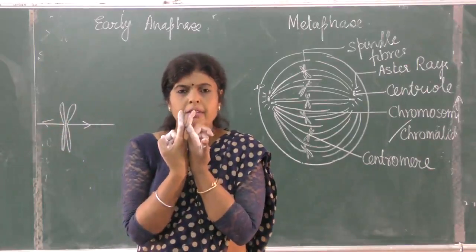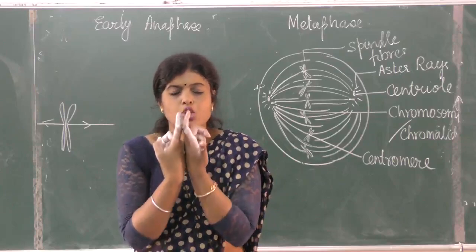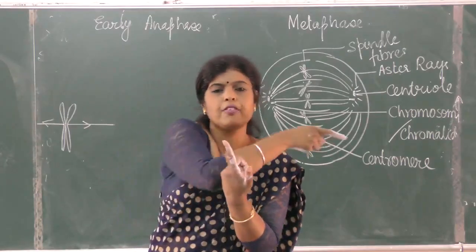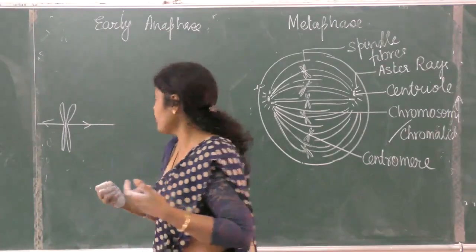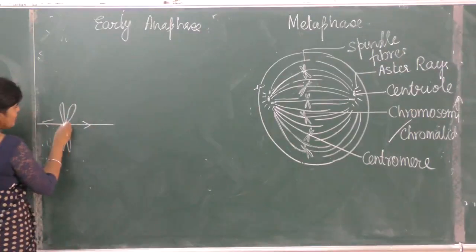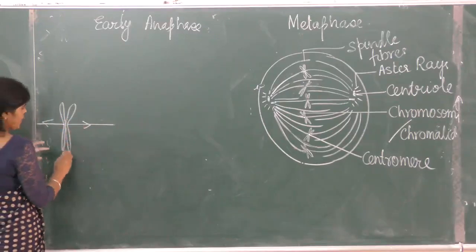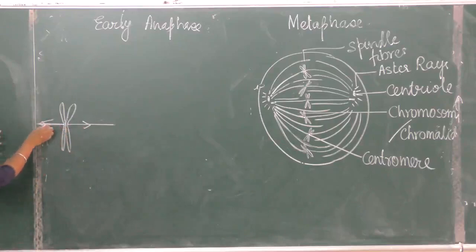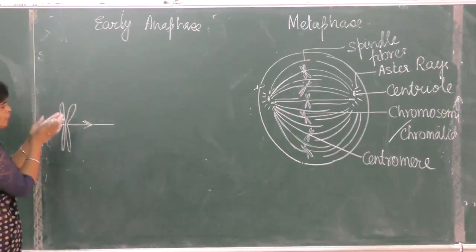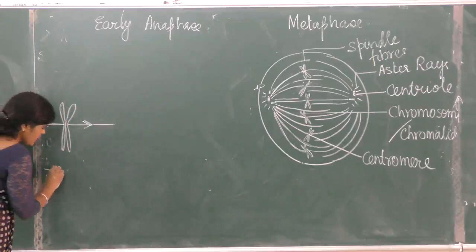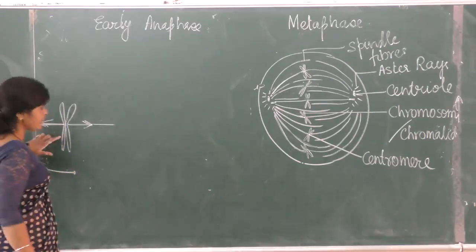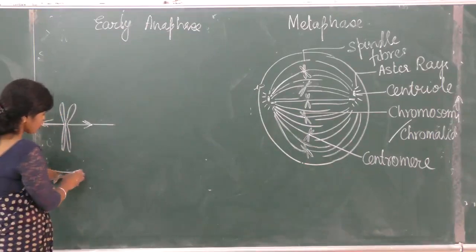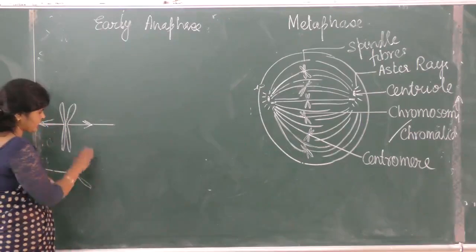The two chromatids were superficially attached, and now due to the pull — one spindle pulling from this side and the other from this side — the two sister chromatids separate and start moving towards opposite poles. The spindle fiber is attached to the centromere, so it is pulling the centromere first, and the chromatid follows.